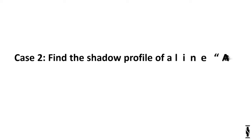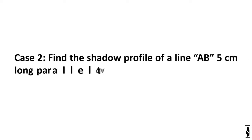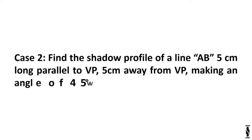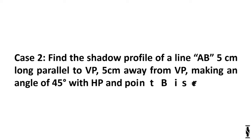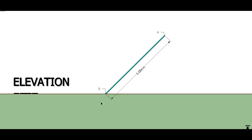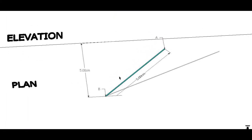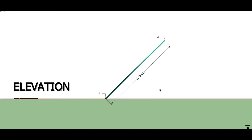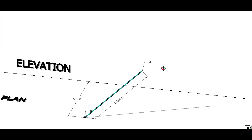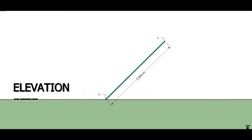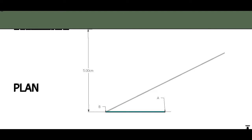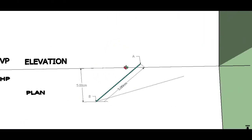Case 2: A line AB, 5cm long, parallel to VP, 5cm away from VP, making an angle of 45 degrees with HP, and point B is resting on HP. Taking a look at the 3D representation, we can see that the shadow is completely falling on the ground, that is HP, and the shadow is starting from the base of the line, that is point B.